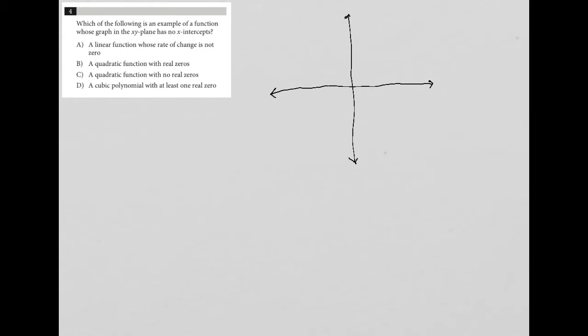So choice A, for instance, says a linear function whose rate of change is not zero. Well, if a rate of change is not zero and that's the only requirement, then I should be able to make up any number that I want. Let's call it two. And then second of all, rate of change will always represent slope. So I'm going to say M equals two.